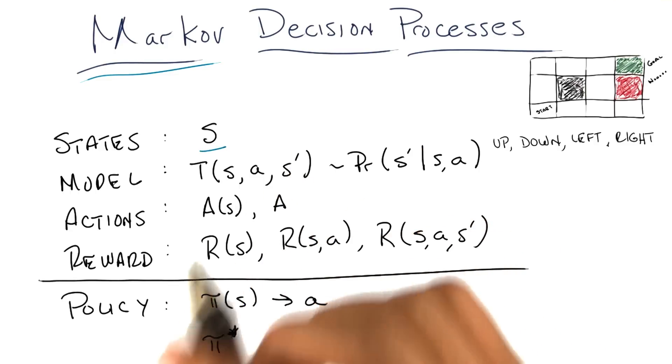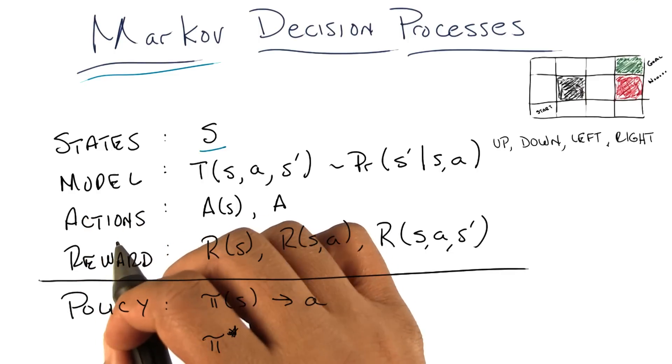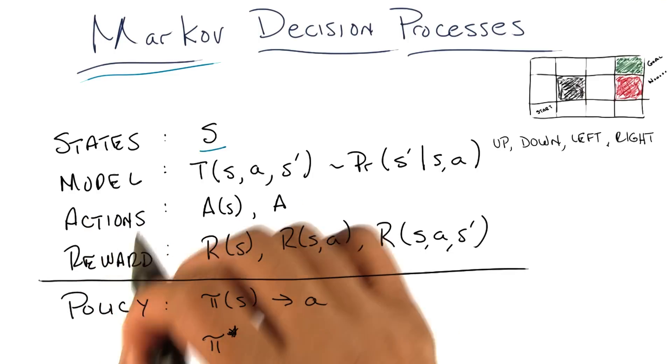All right, so we've got states. Next is what's called the model or the transition model. Sometimes people refer to it as a transition function.